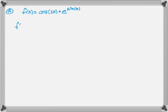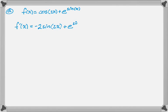First we'll find f'(x). The derivative of cosine of 2x is negative 2 sine of 2x. Then plus the derivative of e to the sine of x, which is e to the sine of x times the derivative of sine of x, which is cosine of x.